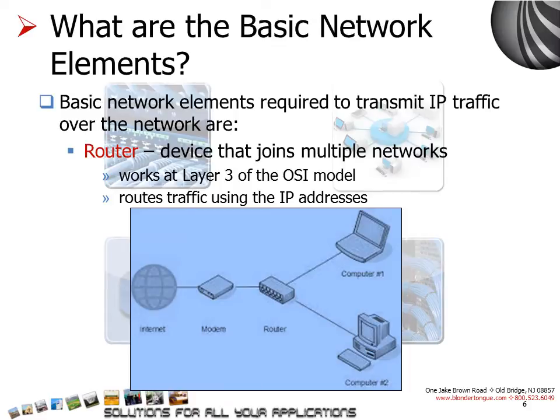What are the basic network elements? Router: a router is a device that joins multiple networks together on a WAN or a LAN. Technically, a router is a Layer 3 gateway device, meaning that it connects two or more networks. A router uses IP addresses to build its routing table and uses that information for routing the traffic.